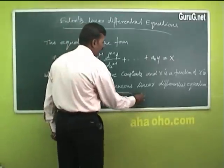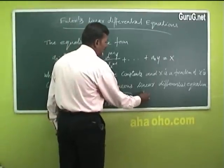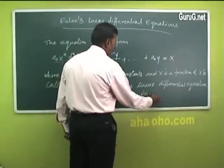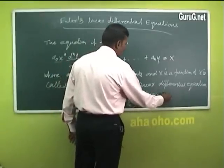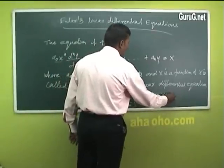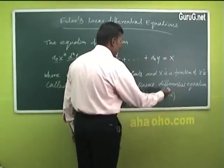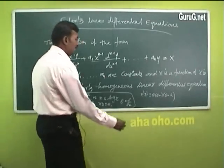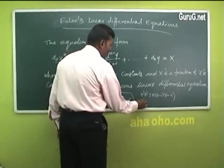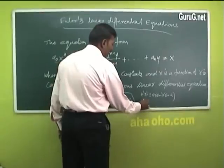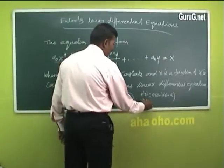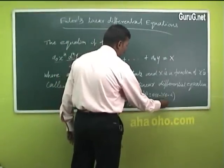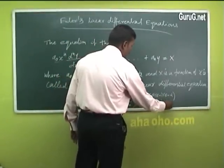If it is x³D³, we write θ(θ - 1)(θ - 2). In general, xⁿDⁿ = θ(θ - 1)(θ - 2)···(θ - n + 1).